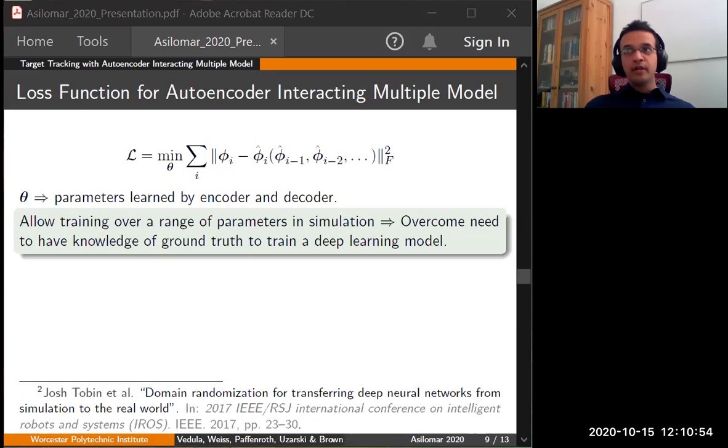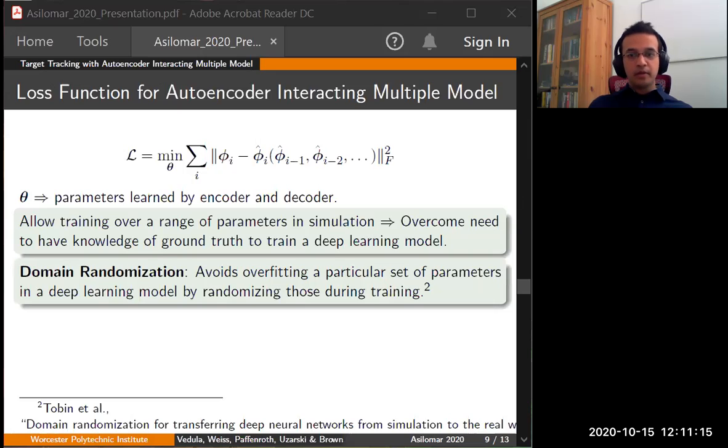During training, we don't have access to ground truth in real life. So we use a concept from robotics called domain randomization, which was proposed by Josh Tobin, and which allows training over a range of parameters in simulation. Thus, we can overcome the need to have knowledge of ground truth in training the deep learning model. The main philosophy of domain randomization is if there is enough variability in the simulated model, the real world is just one among the many variations learned in simulation. The goal is to achieve a high degree of variability in simulation so that the real world being modeled is present in one of those simulations. This is possible when the range of parameter randomization is bounded and informed periodically by domain knowledge.